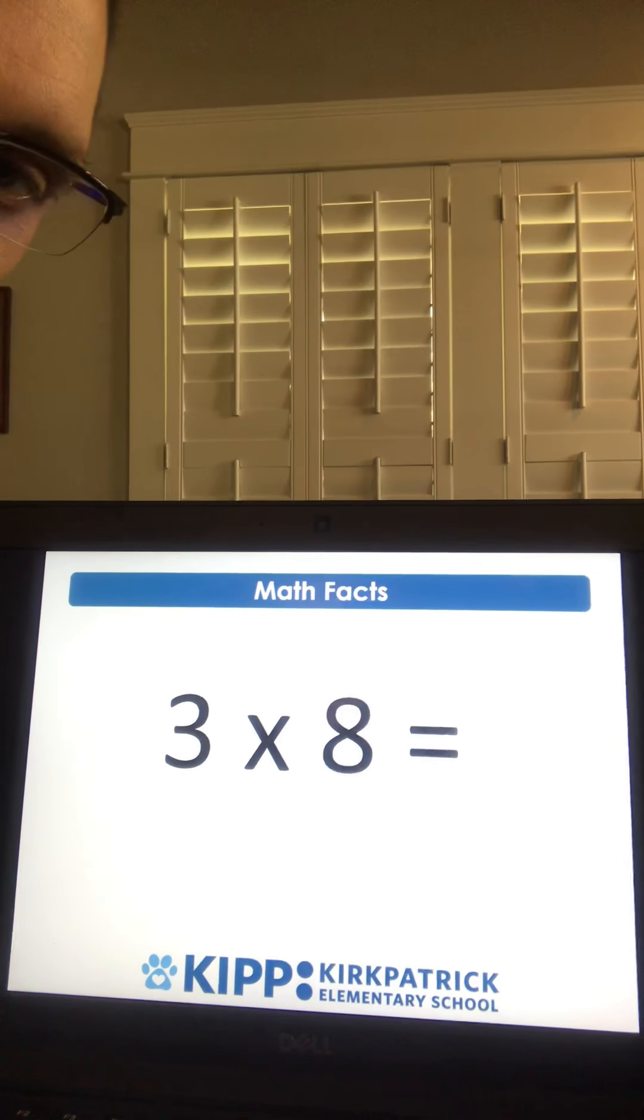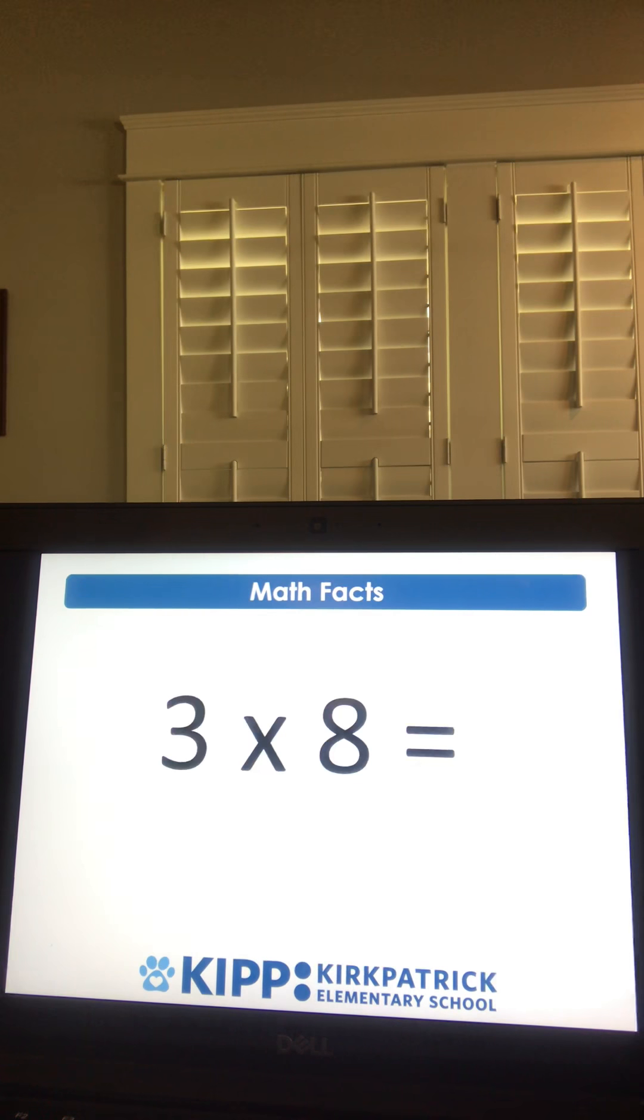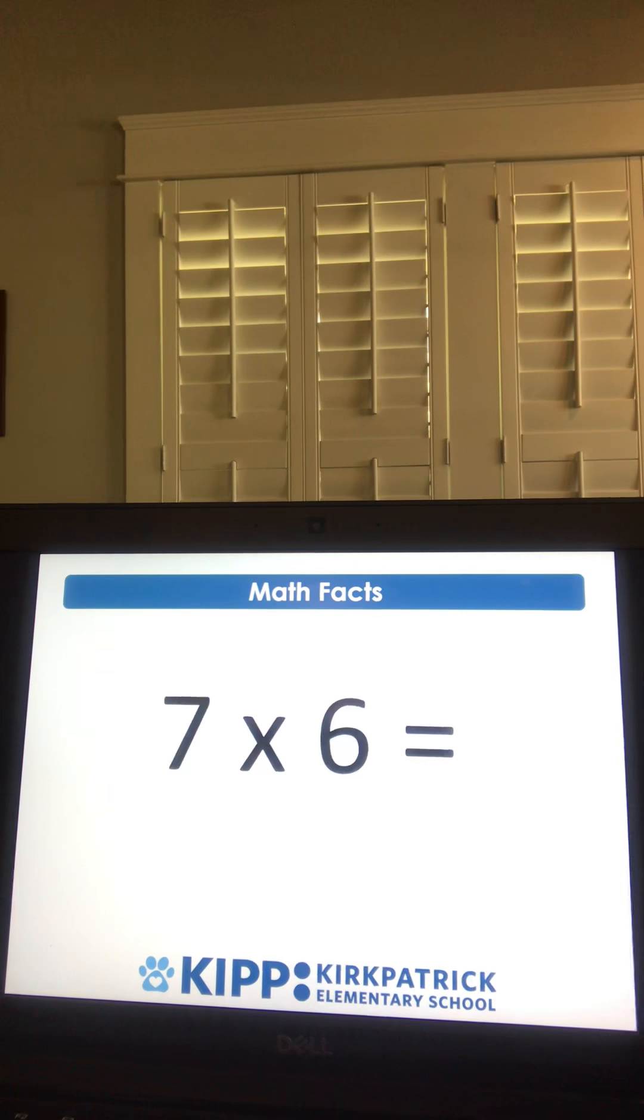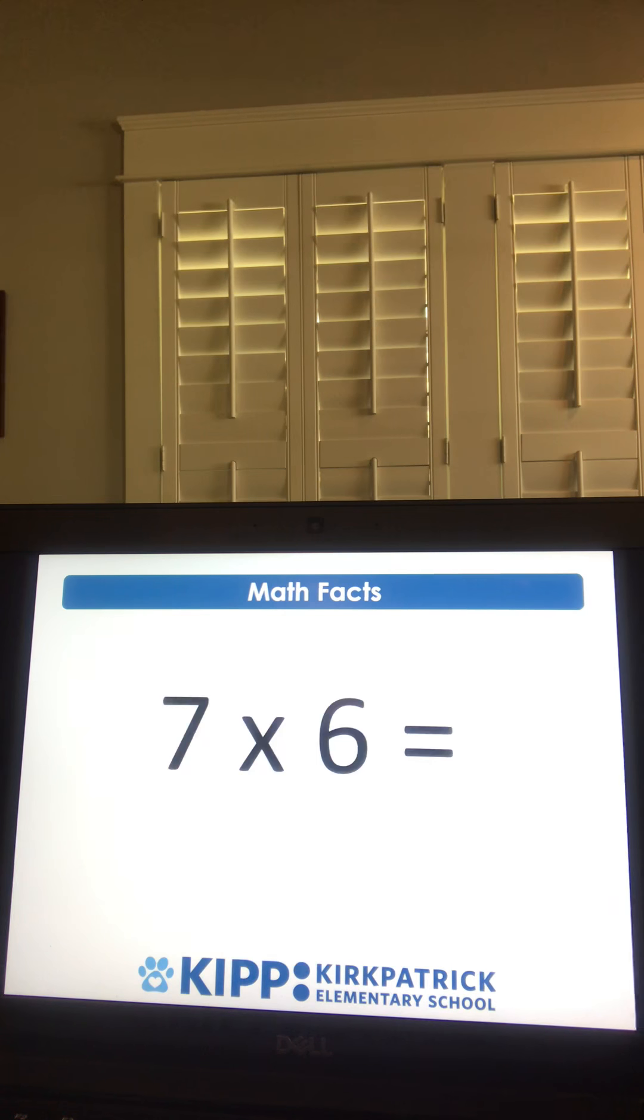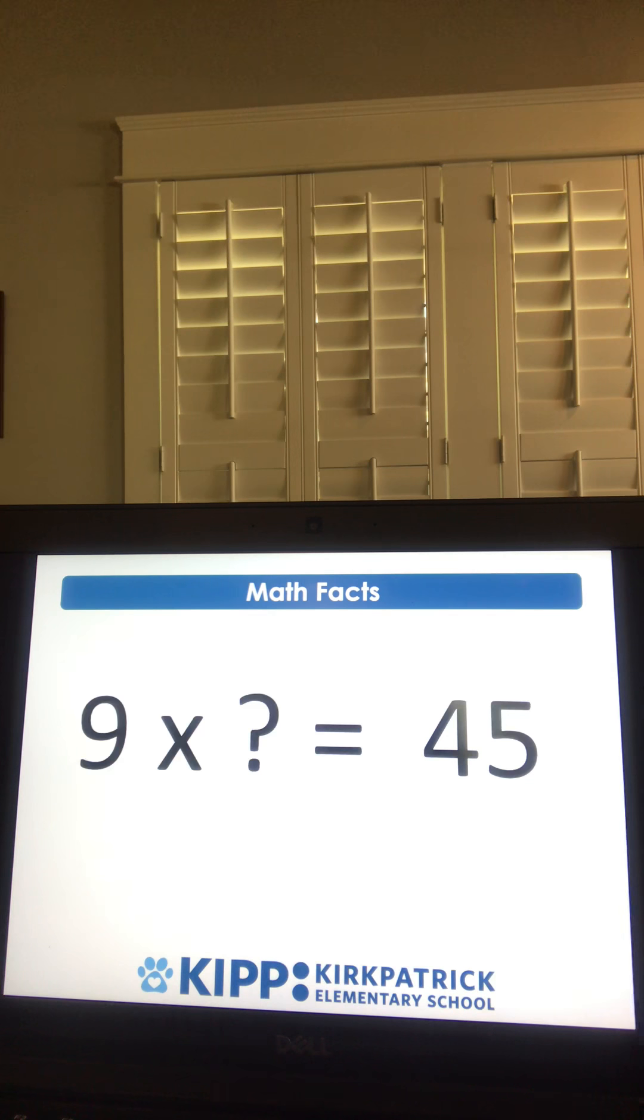All right, let's get started. Here's our first problem, three times eight. That's 24. Seven times six. Nine times what number is the same as 45? That question mark would be a five. Nine times five is 45.